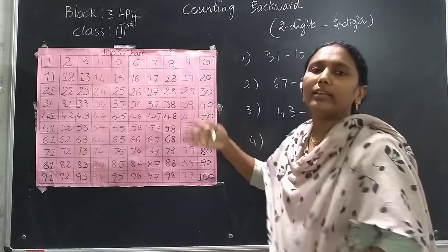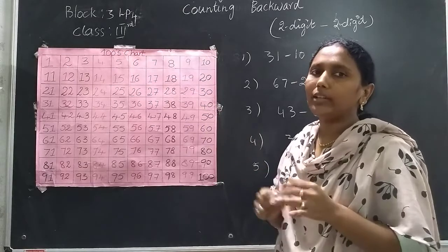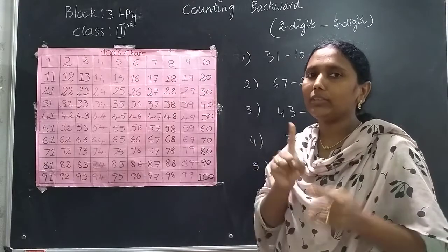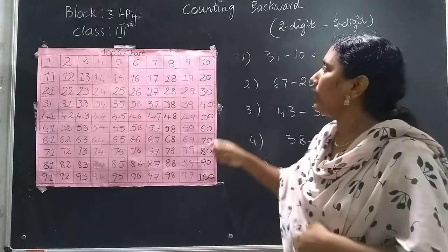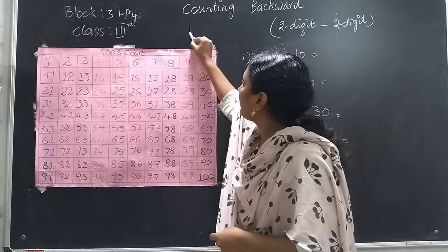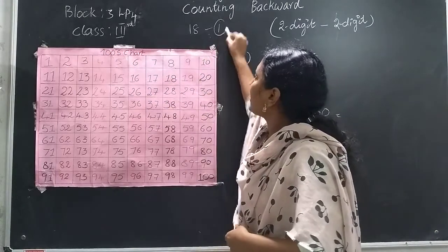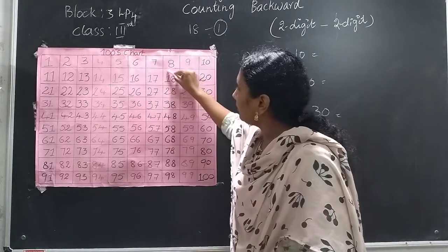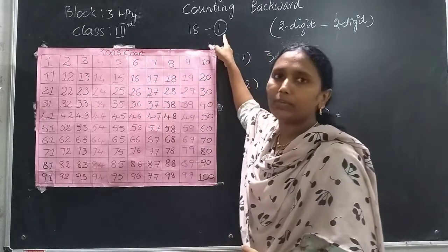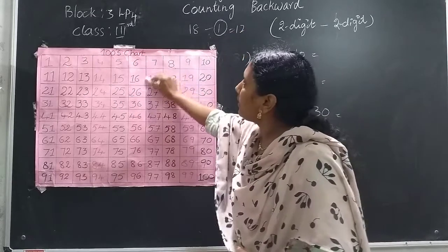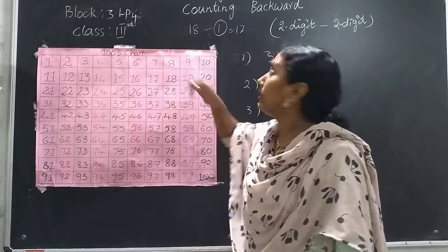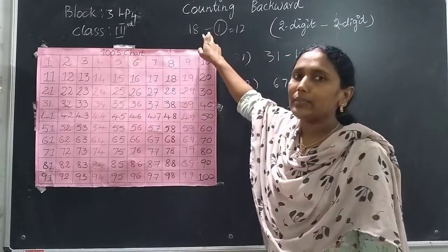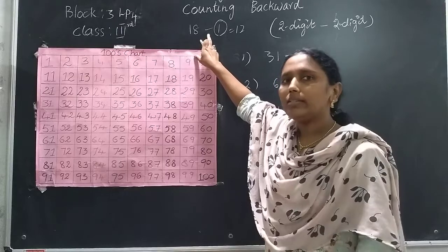In Block 3, LP3, what did we learn? We learnt counting backward with 2-digit minus 1-digit. For example, 18 minus 1 — how many steps do I have to move backward? I have to move from 18, one step backward, so the answer is 17. The number you land on is the answer. The difference means subtraction: 18 minus 1, the difference is 17.